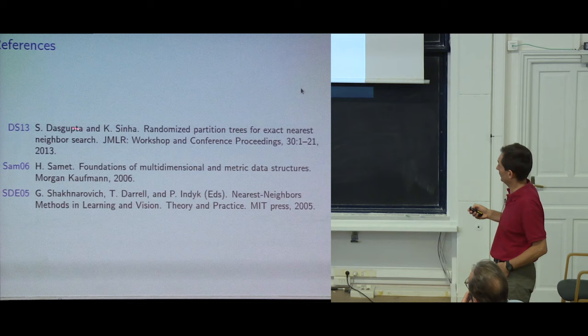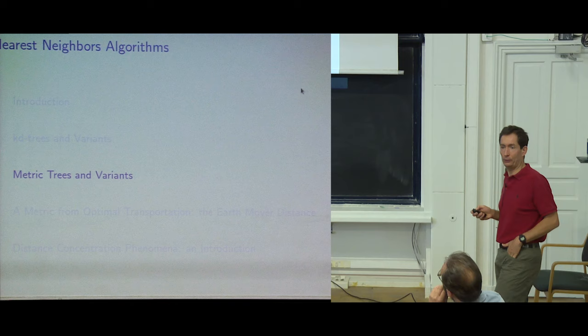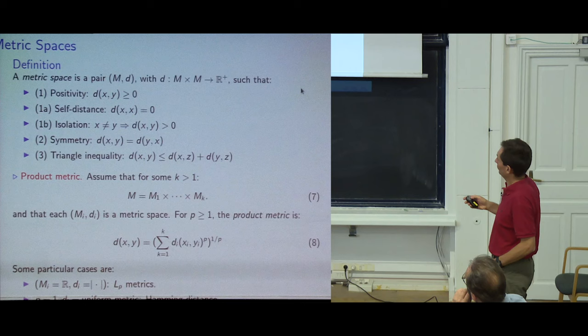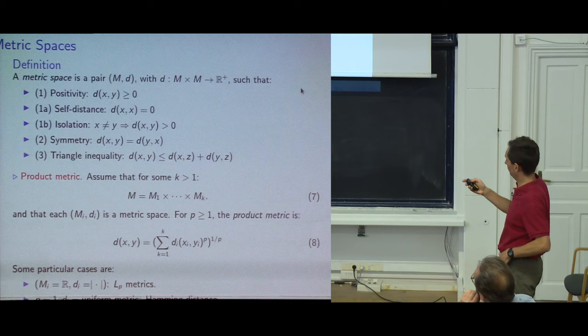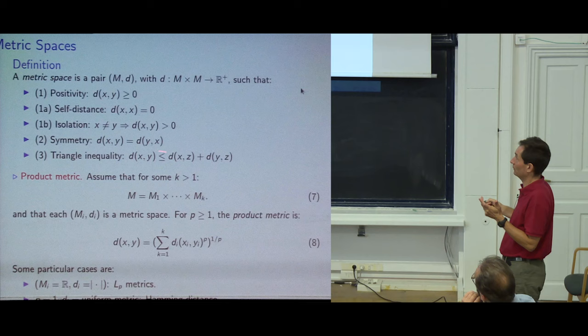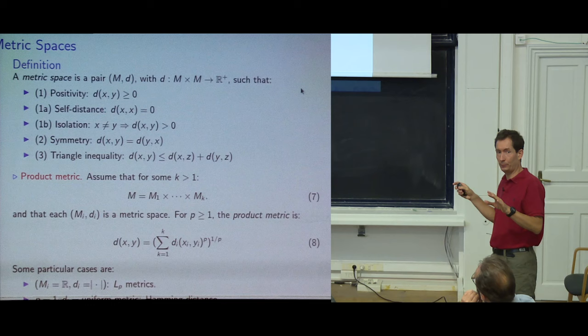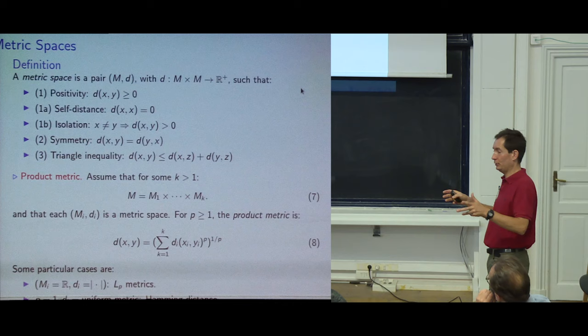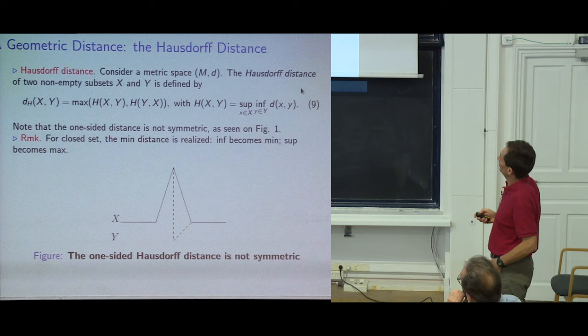Now switching to metric trees — an easy generalization of KD trees for metric spaces. In a metric space, the key properties include the triangle inequality, which we'll use for pruning. Instead of hyperplane splits, metric trees use spherical cuts, and the triangle inequality is used to prune the search.